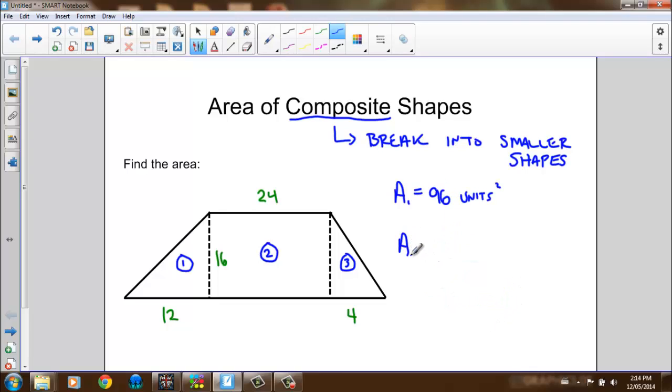The second shape is a rectangle. The area of the rectangle is length times width. My length in this case is 24 units, the width is 16. 24 times 16 is 384 units squared.